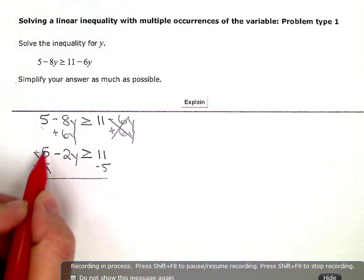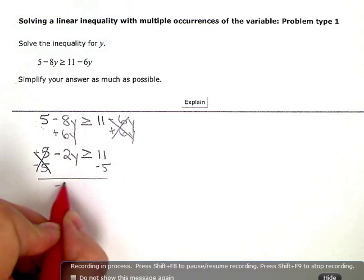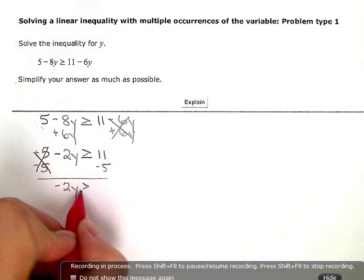So, that one zeroes out and eliminates. And, when I simplify, I have negative 2y greater than or equal to 6.